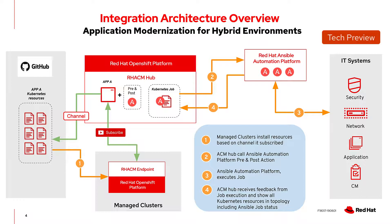During the build of this application, you will have the ability to configure pre- and post-deployment tasks driven by the Ansible Automation Platform. Once configured, the application will begin deploying to all selected resources and any pre- and post-tasks will be executed. You can refer to any of these tasks inside the topology view of Advanced Cluster Management for Kubernetes, including job status by providing a direct URL to the job executing in the Ansible Automation Platform. This empowers developers to build a full end-to-end application without having to waste time on tasks that normally would require integration and interaction with another team — automating what can now be performed with a single pane of glass.